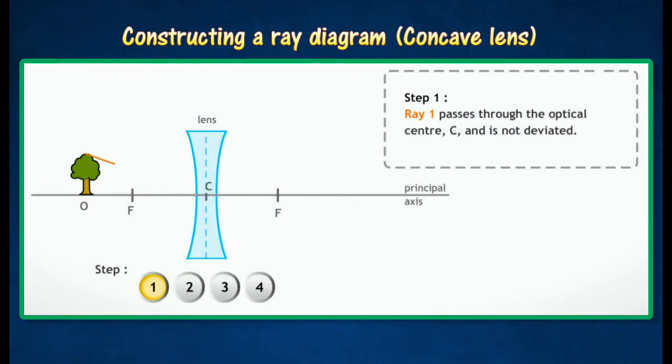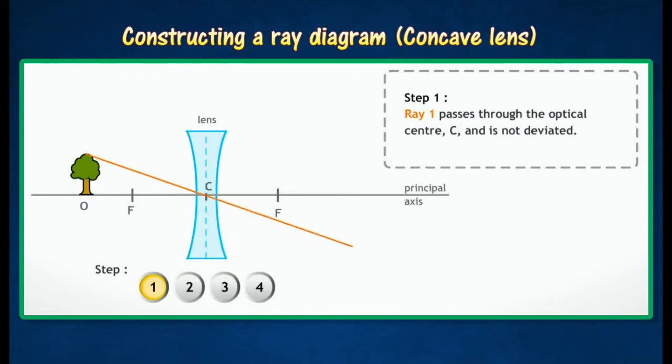Constructing a ray diagram in concave lens. A ray of light passes through the optical center of the lens is undeviated.